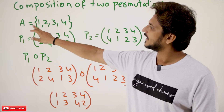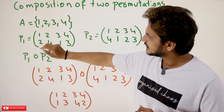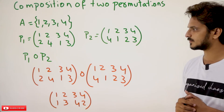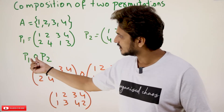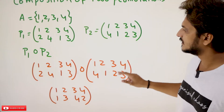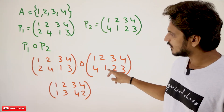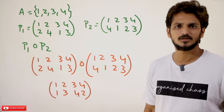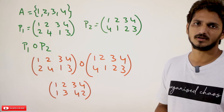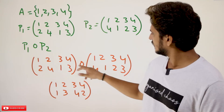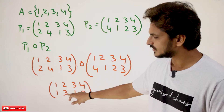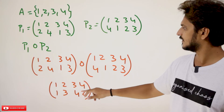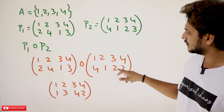Take set A = {1, 2, 3, 4}. This is one permutation P1: 1→2, 2→4, 3→1, 4→3. For P1 composition P2, consider: 1 mapping through P1 gives 2, then 2 mapping in P2 gives 1, so 1 maps to 1. Then 2 maps to 4 in P1, and 4 maps to 3 in P2, so 2 maps to 3. Then 3 maps to 1 in P1, and 1 maps to 4 in P2, so 3 maps to 4. Then 4 maps to 3 in P1, and 3 maps to 2 in P2, so 4 maps to 2. We got the new permutation.